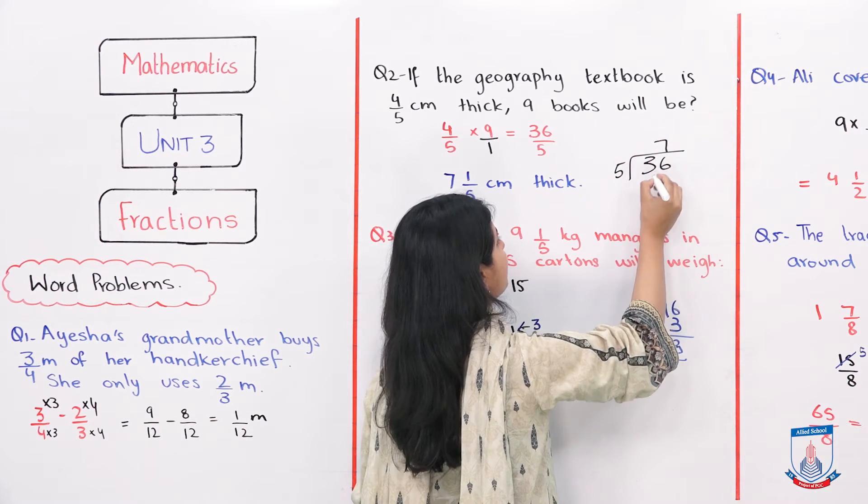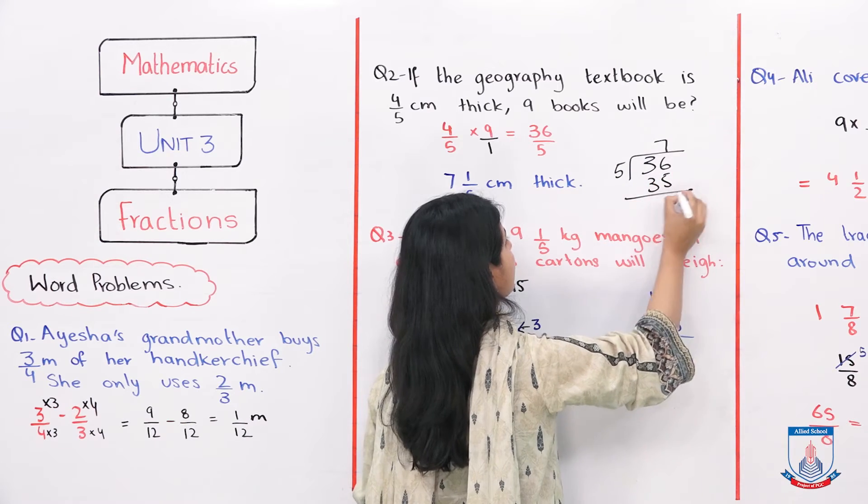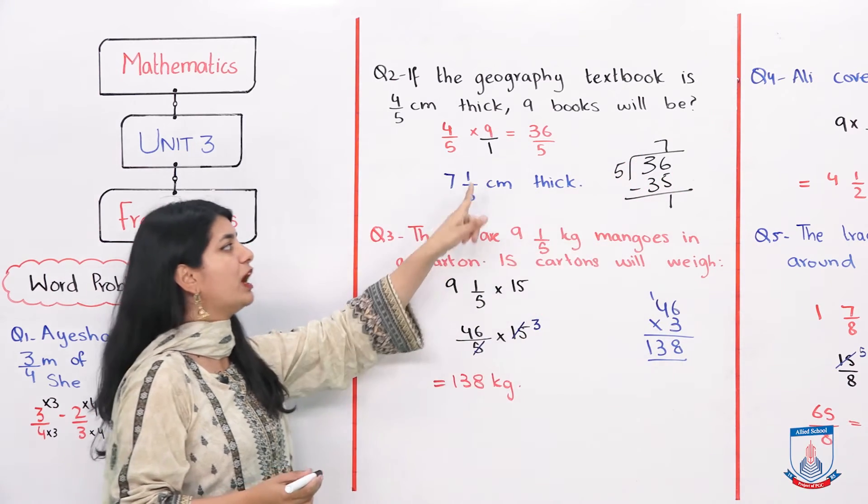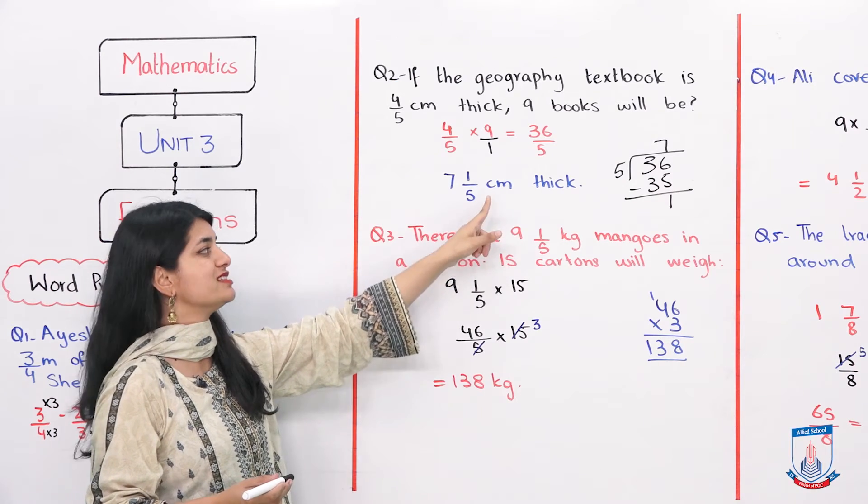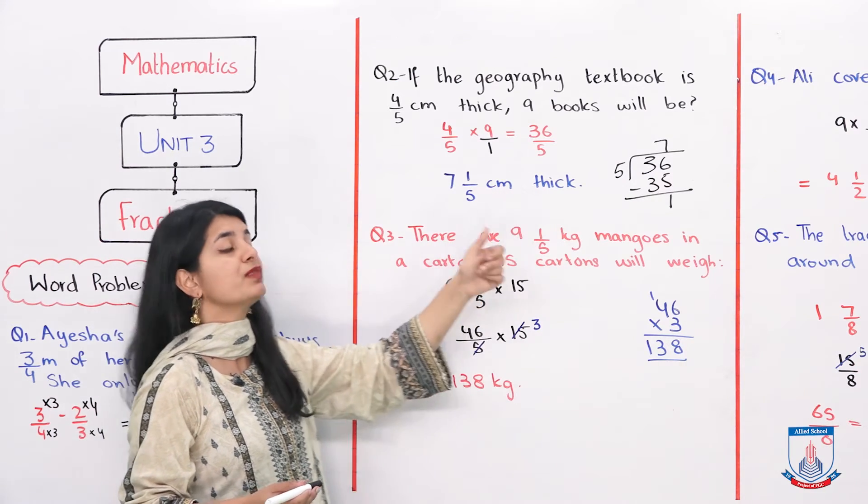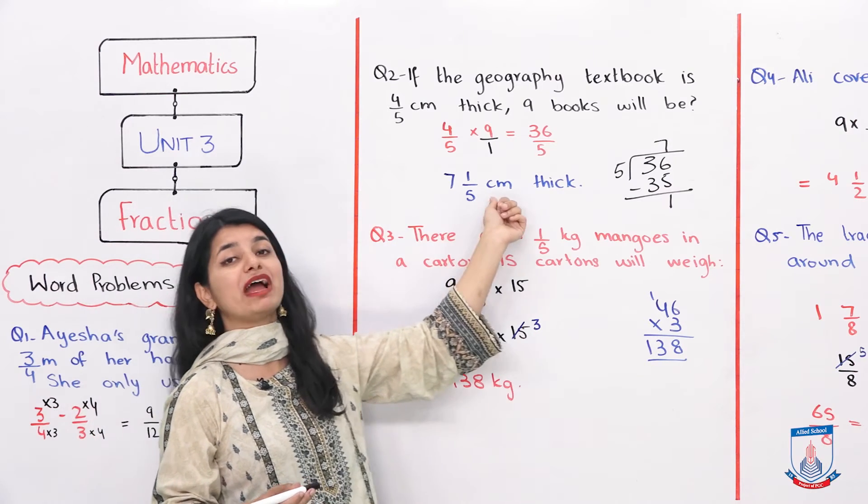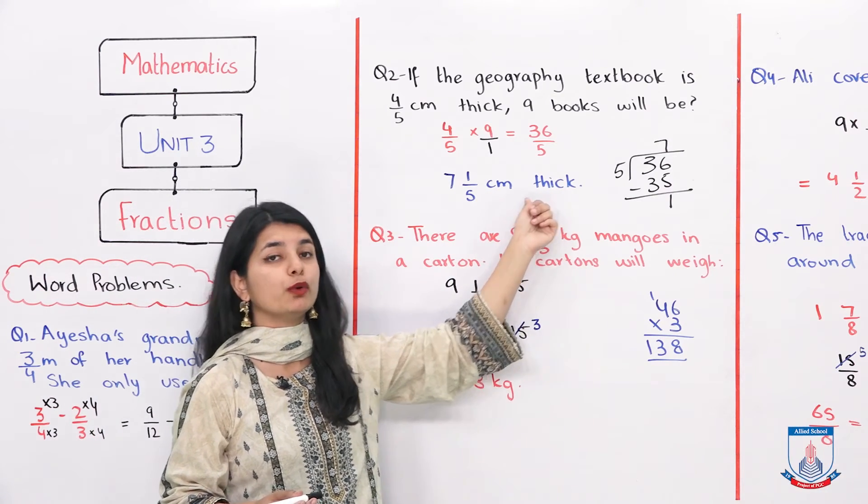5 sevens are 35. The remainder is 1. So you have 7 as the whole number. 1 by 5 is your fraction. And centimeter is your unit. So the total 9 books will be 7 whole 1 by 5 centimeters thick.